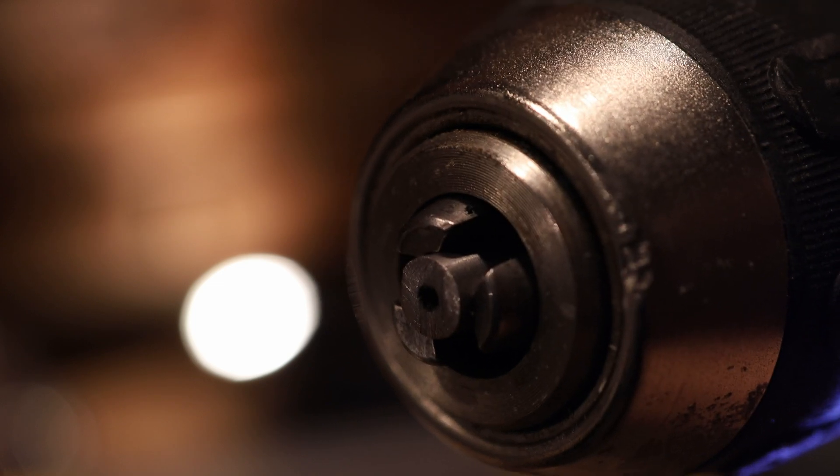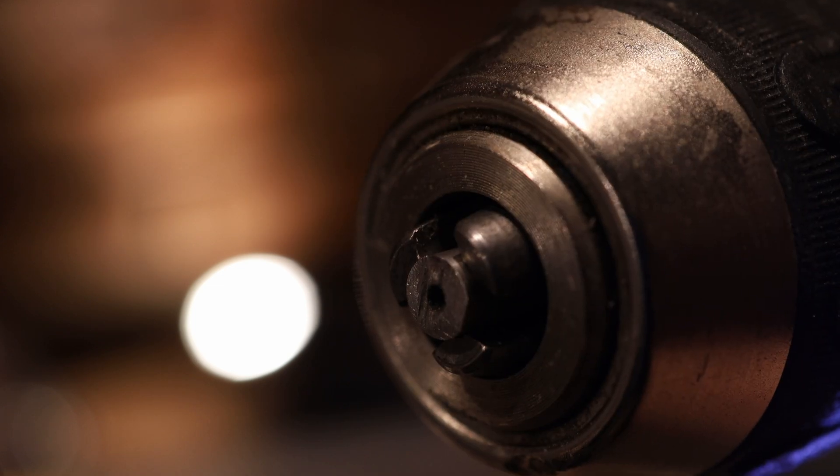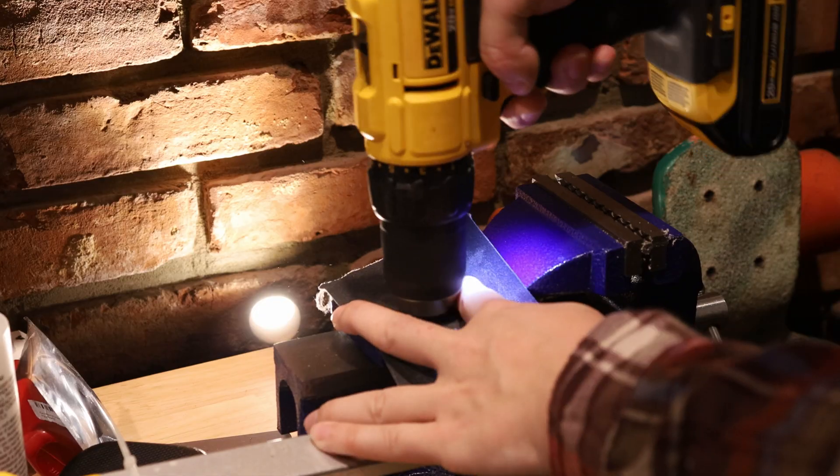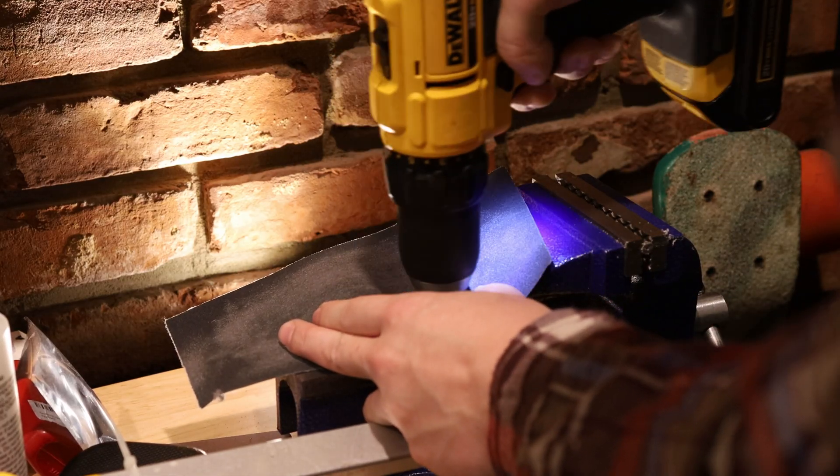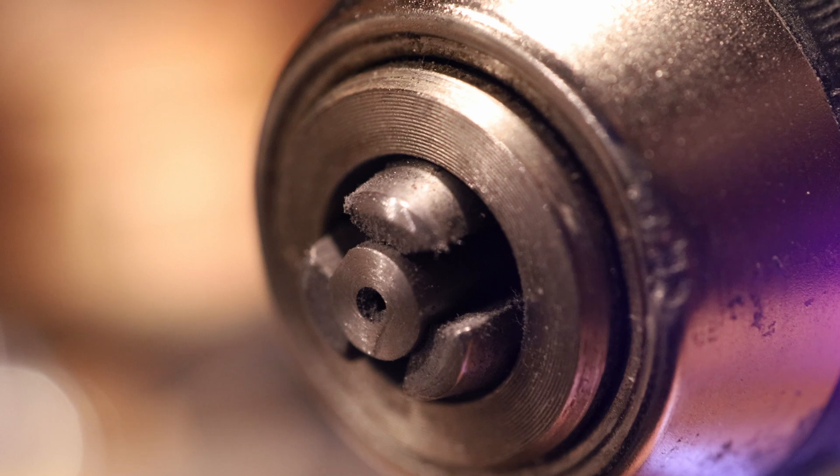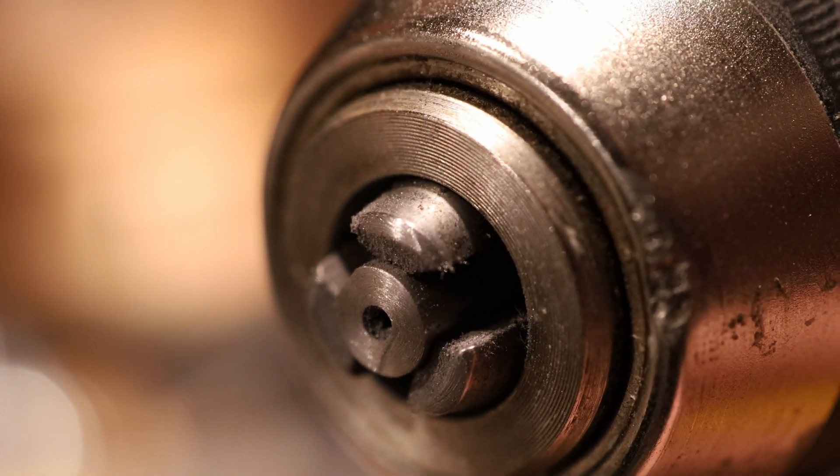Now if I had a lathe, this would be super easy. If you don't have a lathe, you can put this in a drill and spin it around while you press it against sandpaper. You just want to keep at it until all the sanding marks are concentric circles.